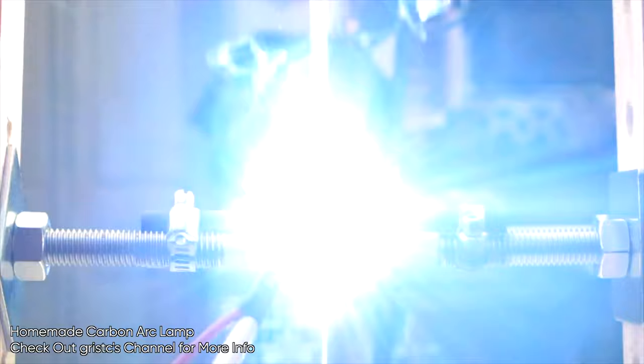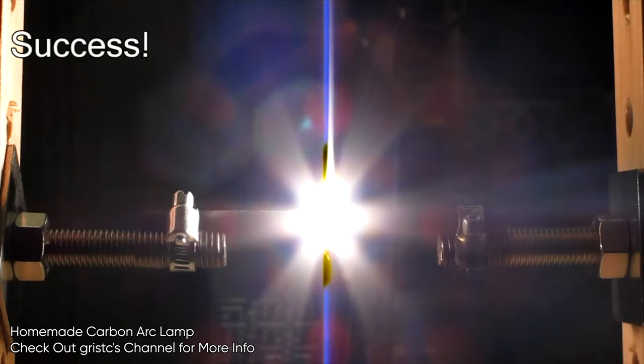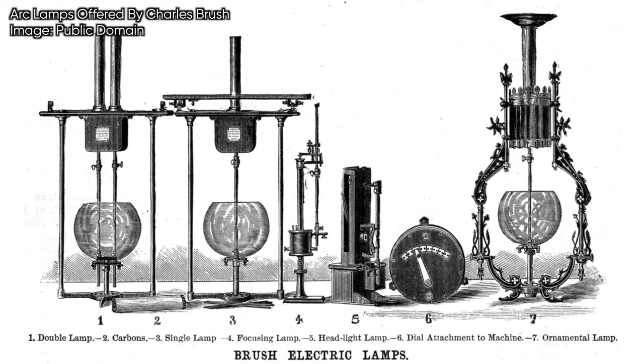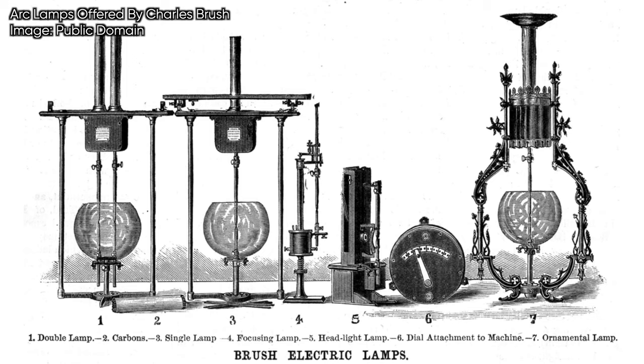The carbon arc lamps became the first electric light sources in widespread use, but they were extremely bright, noisy, and difficult to deal with. They burned out quickly. You can see my video about carbon arc lamps for more about this.